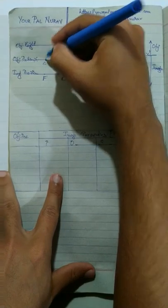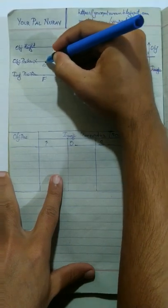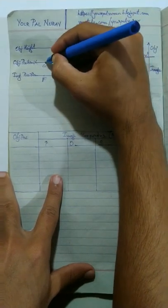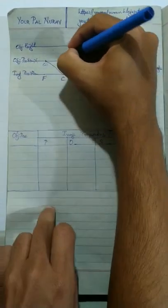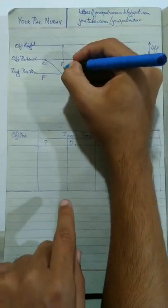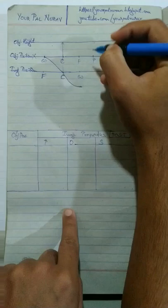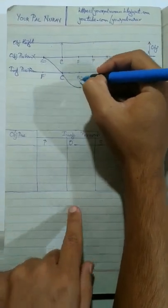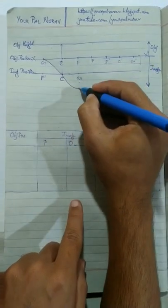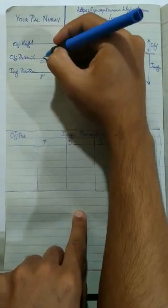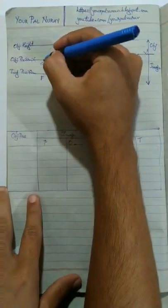The graph has the following profile: when the object is at infinity the image size is zero. As the object is brought from infinity towards C, the image size keeps increasing. When the object is at C, the image size is exactly equal to the object size. The size then keeps increasing until it reaches a maximum when the image is formed at infinity. After that it decreases again. So the graph increases, reaches a maximum, then decreases back.